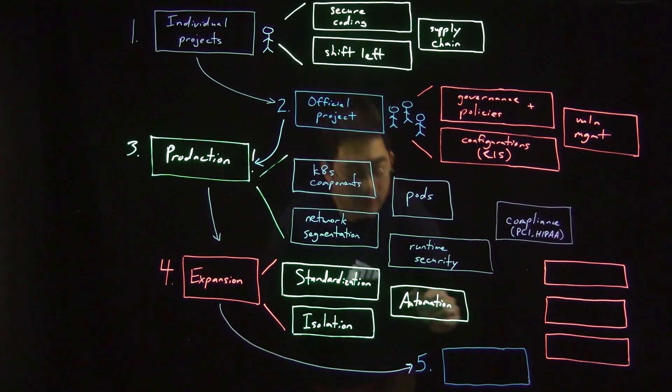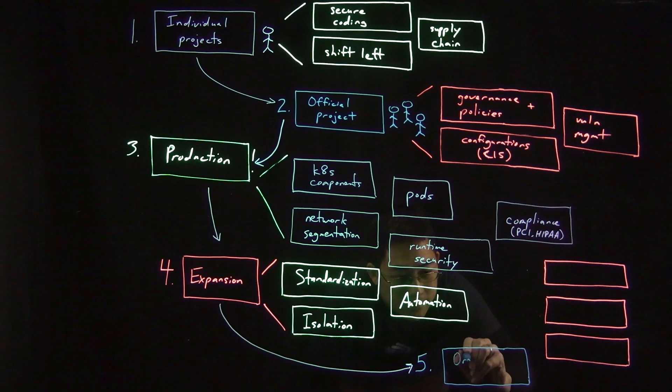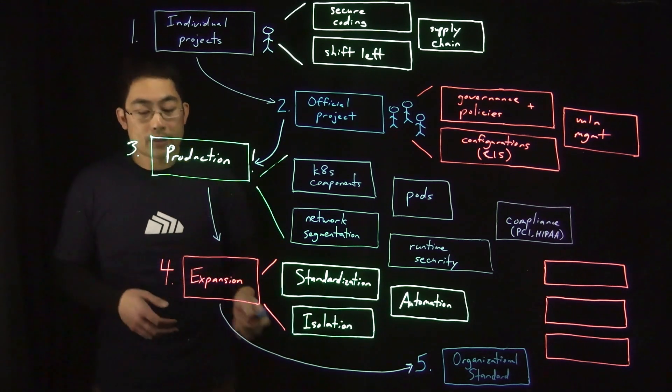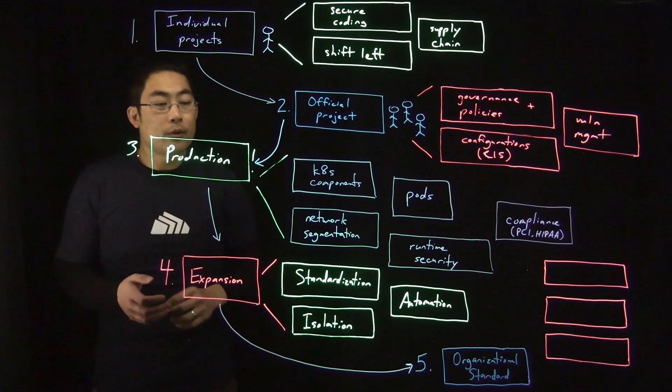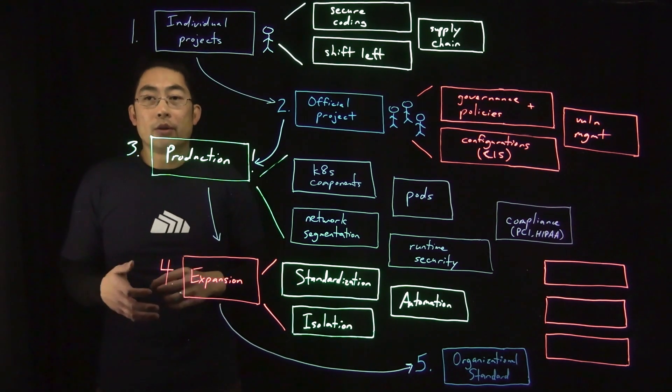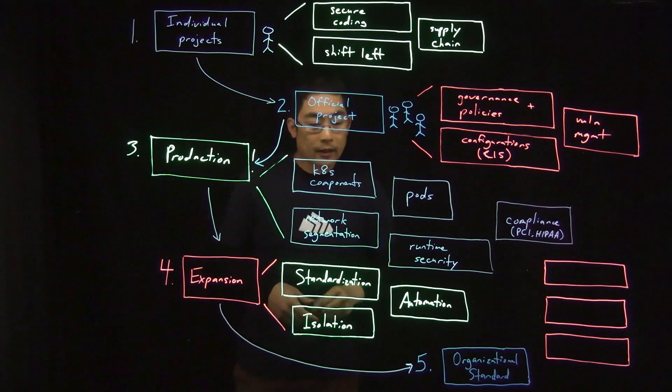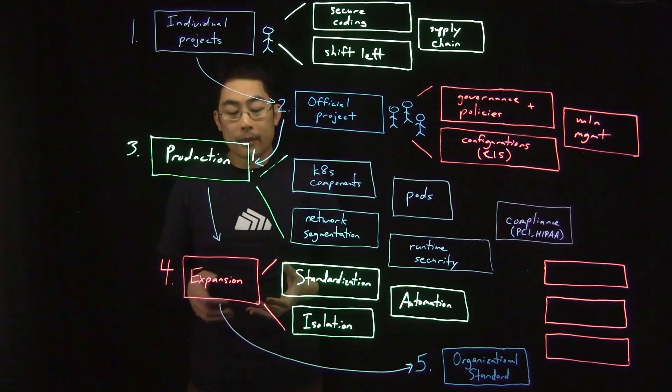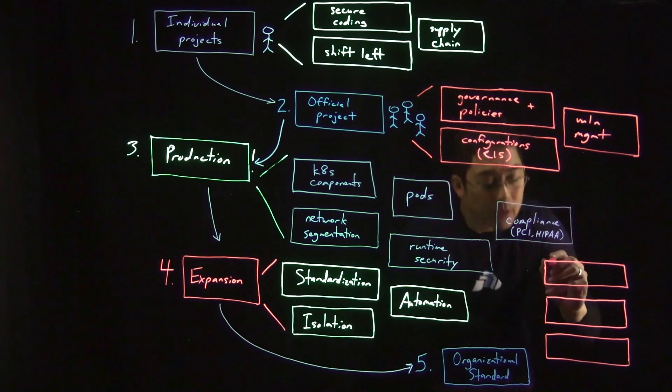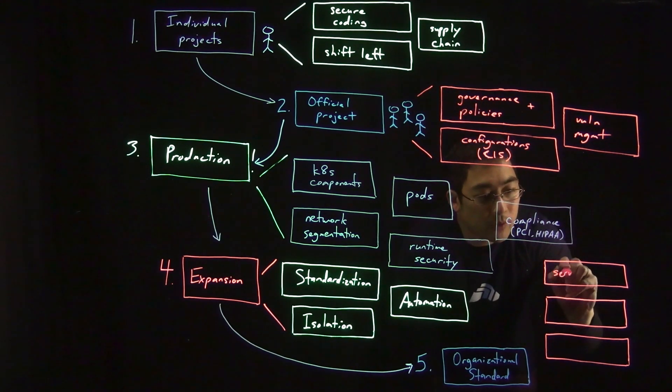At the fifth stage, this is when Kubernetes itself and containers have become an organizational standard. What that means is that really all applications that your organization is building and running are in some way built on top of Kubernetes or built for Kubernetes or related to cloud-native principles. At this stage, at this level of scale and operational maturity, it's very likely that your organization is turning to new technologies such as service meshes to enable different types of use cases.